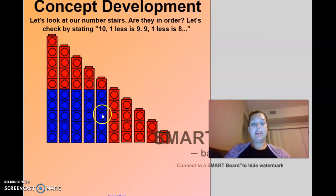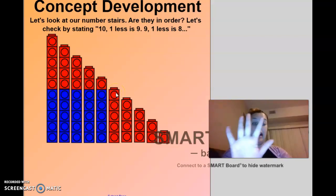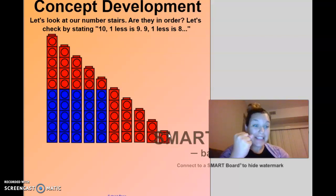Six, five, four, three, two, one. Six, one less is five. Five, four, three, two, one. Five, one less is four. Four, three, two, one. Four, one less is three. Three, two, one. Three, one less is two. Two, one less is one. Now here's a challenge. One, what's one less than one? Zero. Great job.